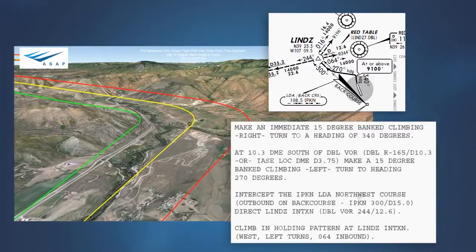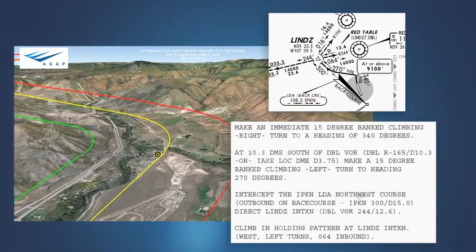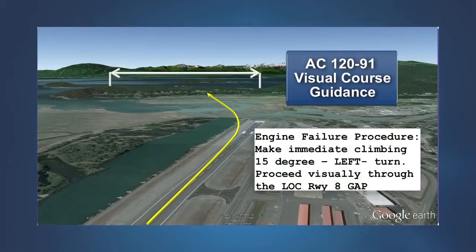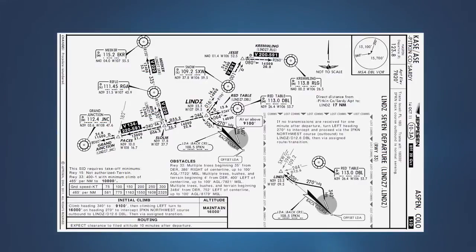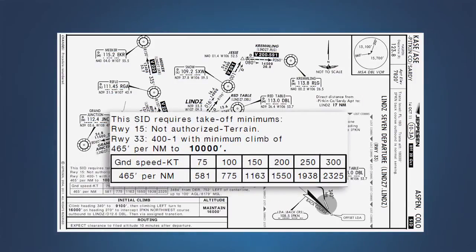There is an option to reduce the obstacle accountability area through analysis of the ground track taking into account wind and available course guidance. Another option provided in the AC uses visual guidance to avoid obstacles — the AC requires that specific procedures be provided to the flight crew along with any weather or lighting requirements necessary to maintain reference with the desired ground track. IFR procedures like the Linns standard instrument departure often contain minimum climb requirements. As mentioned by our flight crew in the Aspen briefing, this SID has a climb gradient requirement of 465 feet per nautical mile up to 10,000 feet MSL.